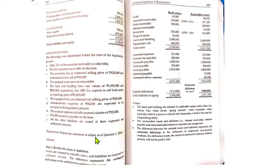The requirement is to prepare the statement of affairs as of January 1, 20X1. Step 1 is to re-state the assets and liabilities at realizable value, because we need to measure everything at what it can actually be sold for now, since we are a liquidating entity and PFRS going-concern measurement no longer applies.